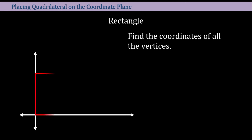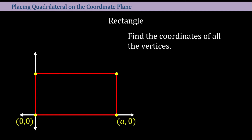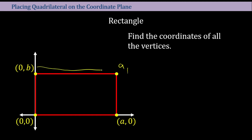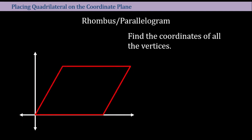For a rectangle, the thing we need to consider is that the sides may not be equal. So let's assume the horizontal and vertical sides are different lengths. Again, one corner is (0, 0), the next along the x-axis is (a, 0), and the corner going up is (0, b). It doesn't matter what variable you use, as long as b is not equal to a — it could be c, x, or y. Since the x-value here is a and the y-value here is b, the fourth corner is (a, b). That's how you place a rectangle on a coordinate plane.